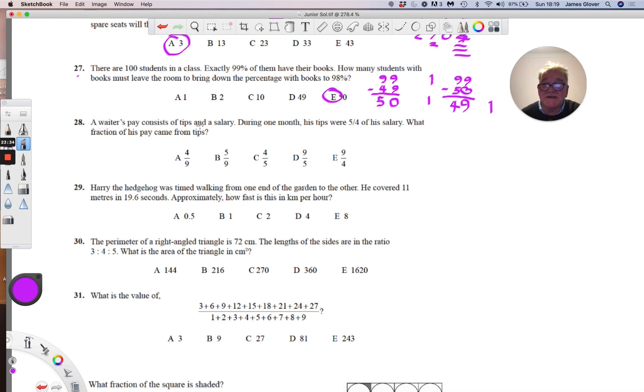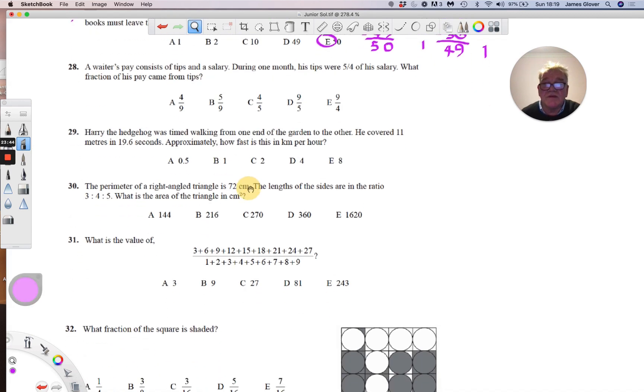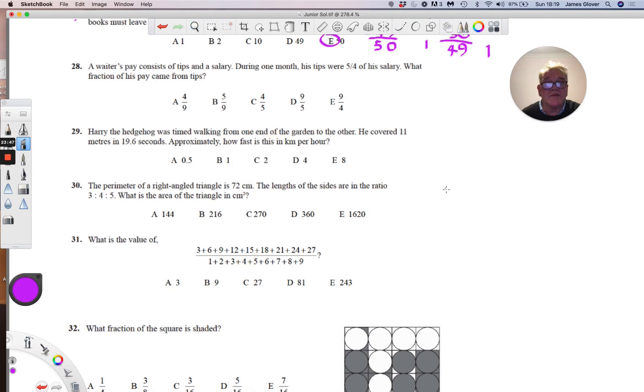A waiter's pay consists of tips and a salary. During one month his tips were 5 fourths of his salary. What fraction of his pay came from tips? So his tips were 5 fourths of his salary. So let's say his salary is S, and 5 fourths of his salary, so we multiply this by 5 fourths. And this is the tips.